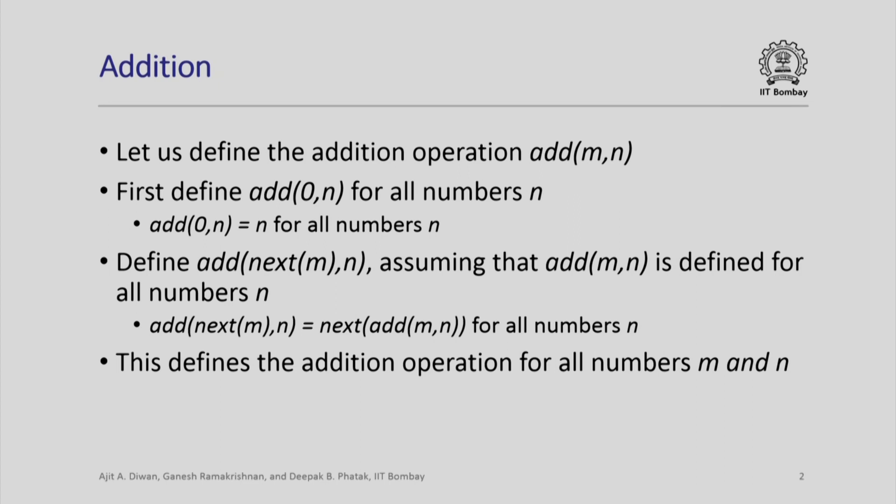For add 0, n when m is equal to 0, we define the value to be n itself for all numbers. Now, what is add of next m, n? We define that assuming that add of m, n is defined for all numbers n. And this is easy to see: add of next m, n is the next of add applied to add of m, n for all numbers n.